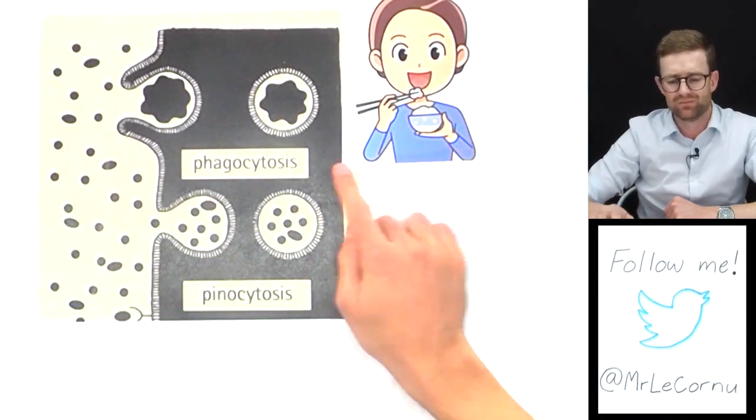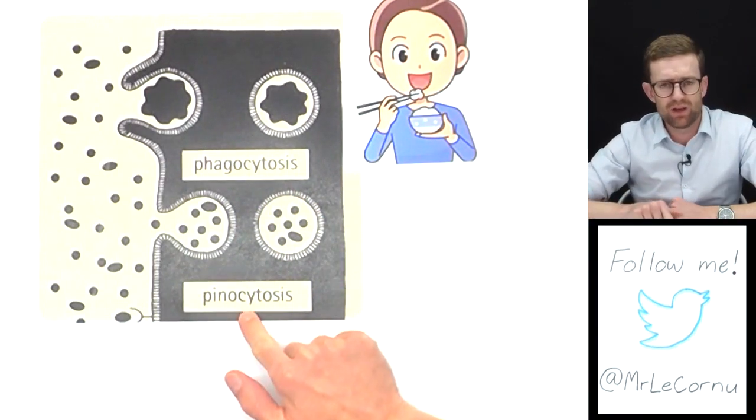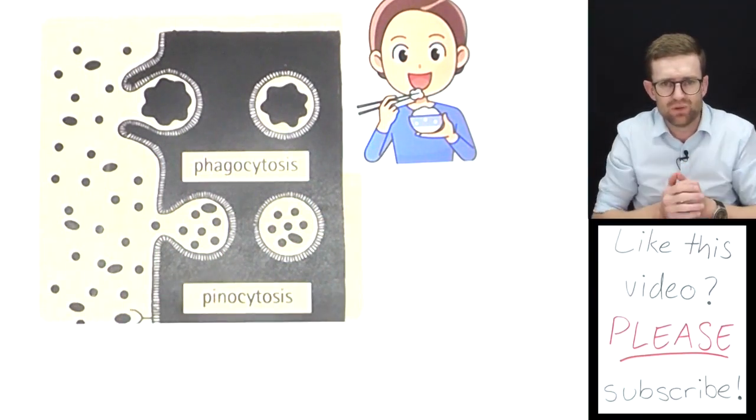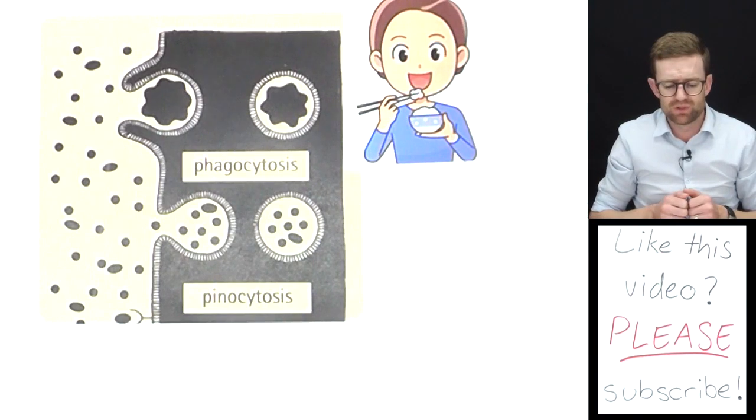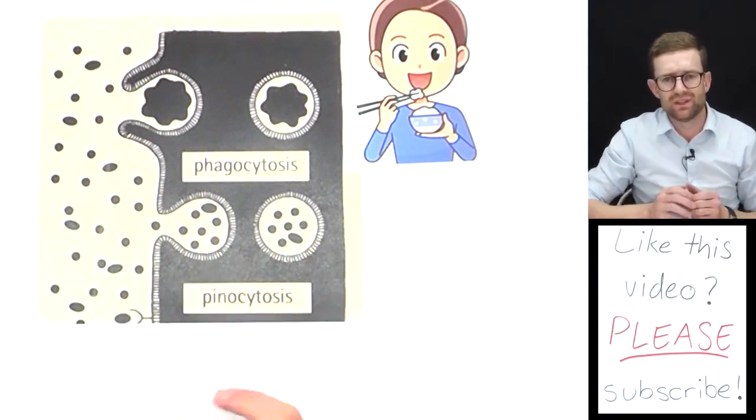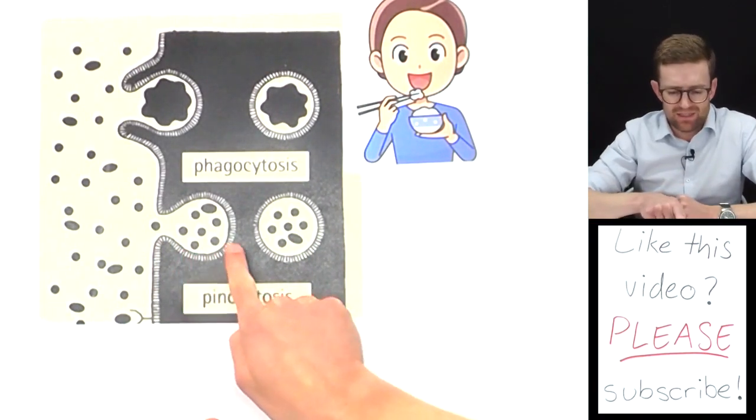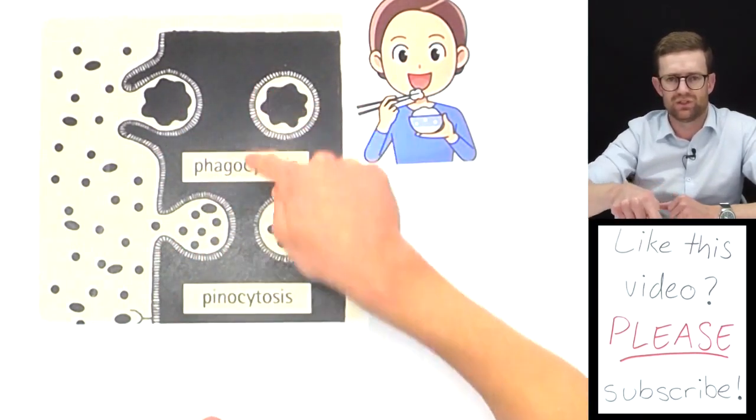Because phagocytosis is for the larger particles, it's often referred to as cell eating. Phagocytosis: cell eating. Pinocytosis is the same process but on a much smaller scale. It's for liquids or large molecules, but they enter through the cell in the same way that we've looked at already, with the cell membrane engulfing around them.